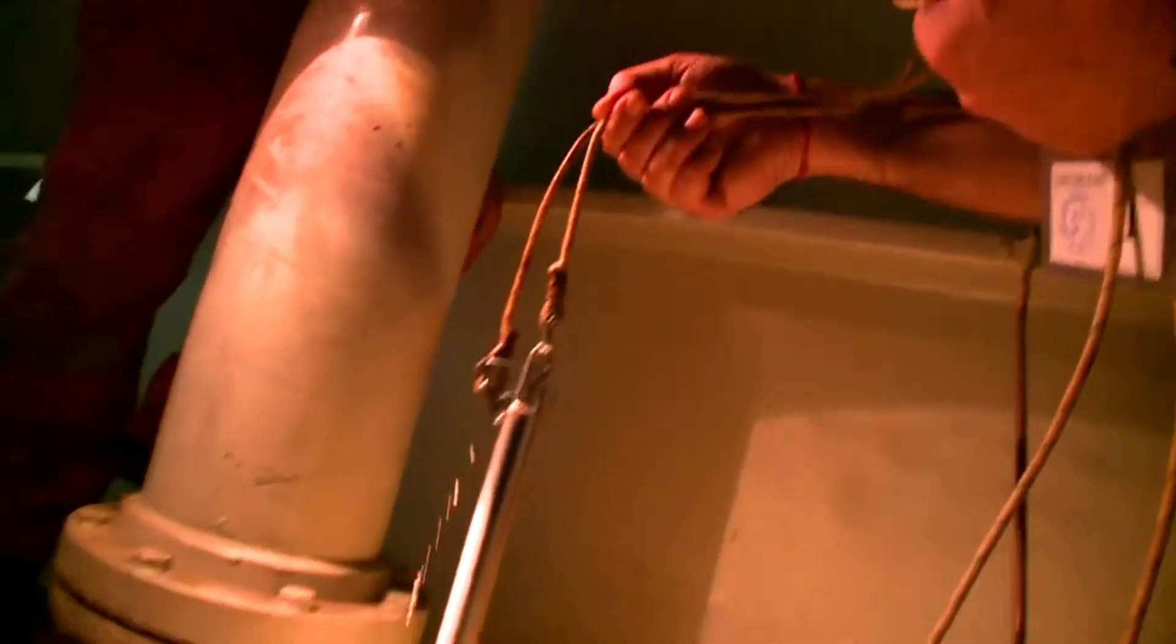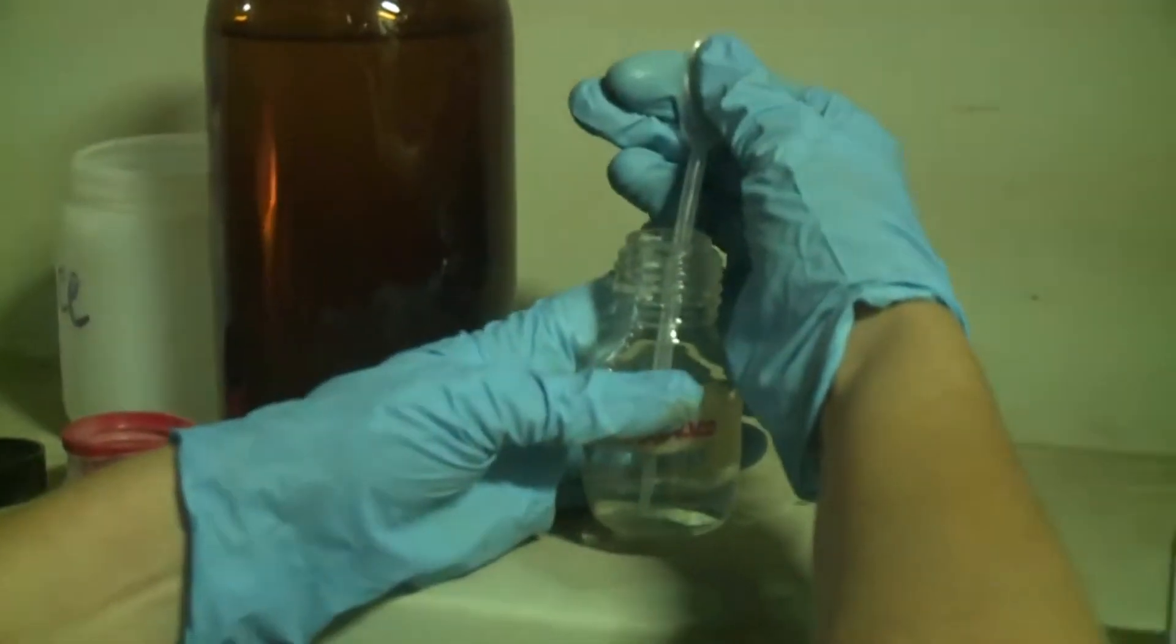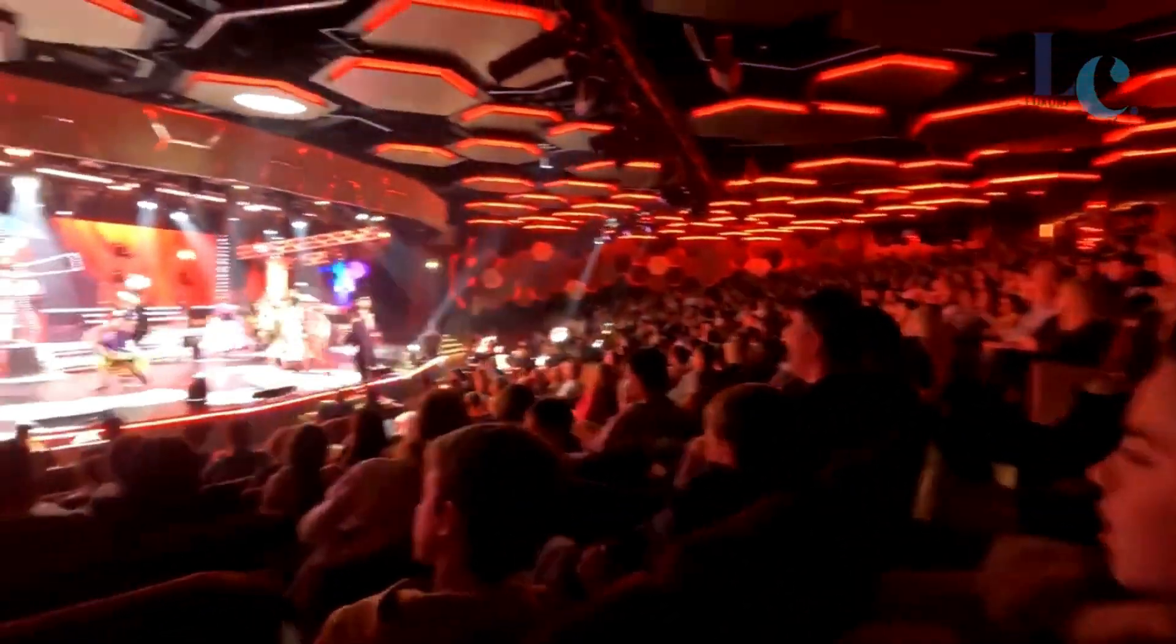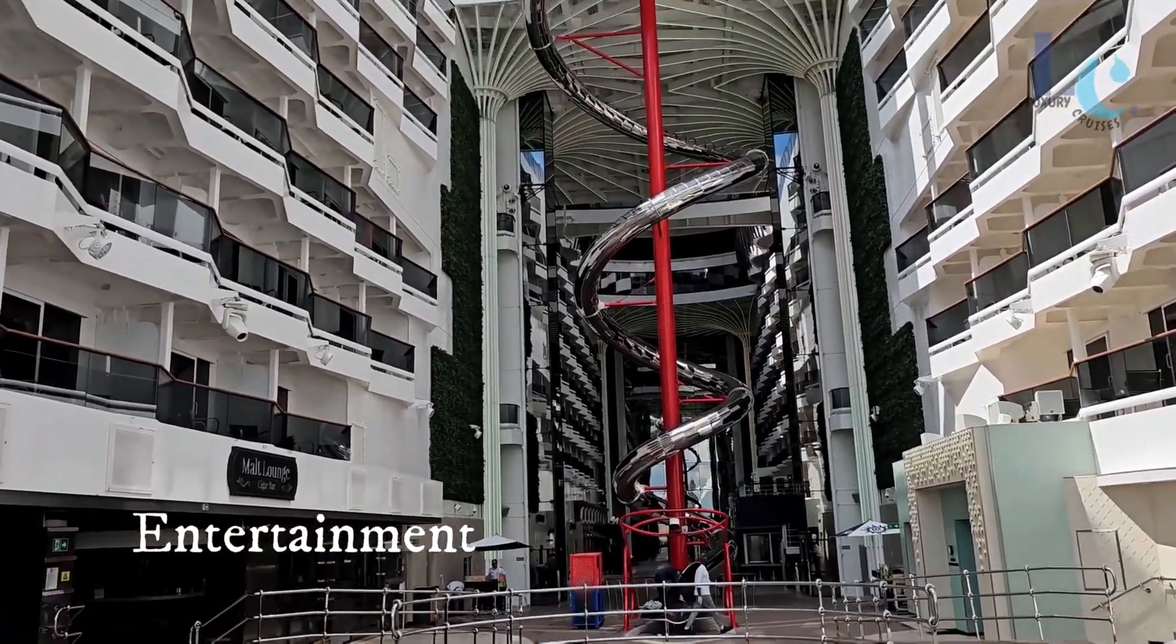Now, you might be wondering, why go through all this trouble? Well, it's because cruise ships don't have access to fresh water supplies like cities on land. They're out in the middle of the ocean, and they need to be self-sufficient when it comes to providing water for thousands of passengers and crew.